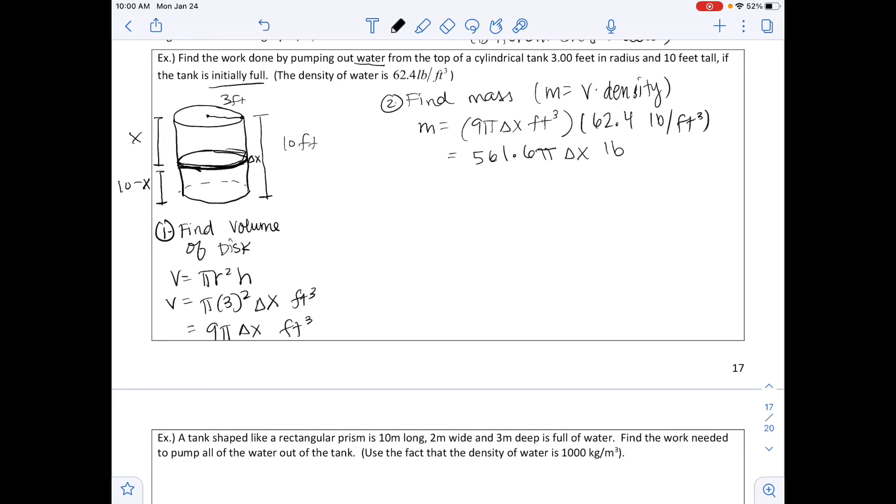Right now we have calculated the mass of that disk. From here we need to find the work to push this disk up and out of the tank. Find work for the disk. Work equals mass times our height to get that disk out of that tank. We have mass, we just found that. So work is 561.6 pi delta x, and our units were pounds, times the height. The height that we defined on our shape was x. So I'm going to call it x, and our units were feet.